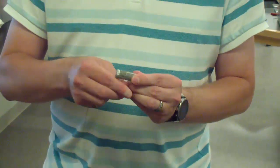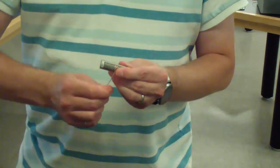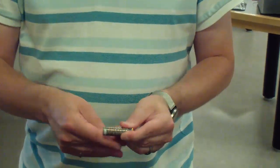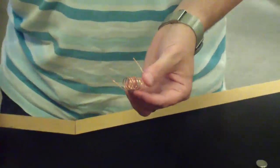Wind the bare wire around the battery. Make sure that the coils don't touch each other to avoid shorting out any of the loops. It may be helpful to leave a little bit of straight wire at each end for ease of clipping.